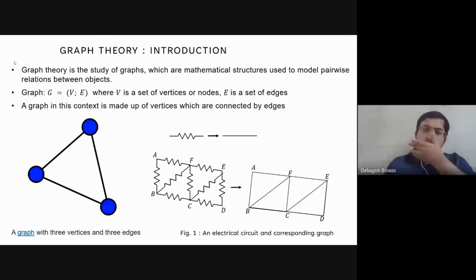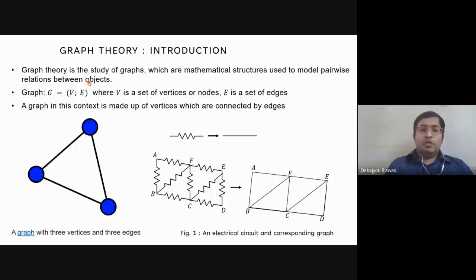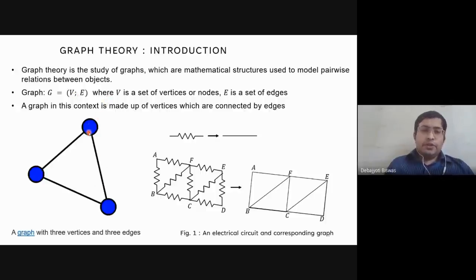Graph theory in mathematics and computer science is the study of graphs. Graphs are mathematical structures used to model pairwise relations between objects. A graph G is made up of two types of objects: vertices and edges. We represent a graph G comprising of V and E — two sets — where V is a set of vertices or nodes.